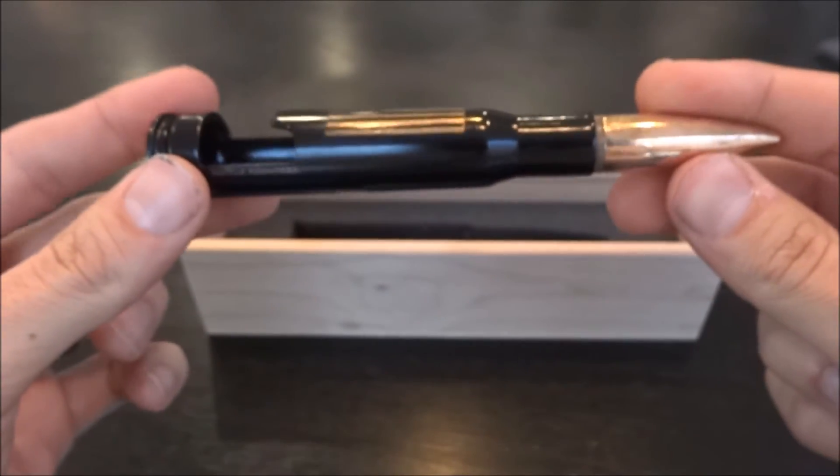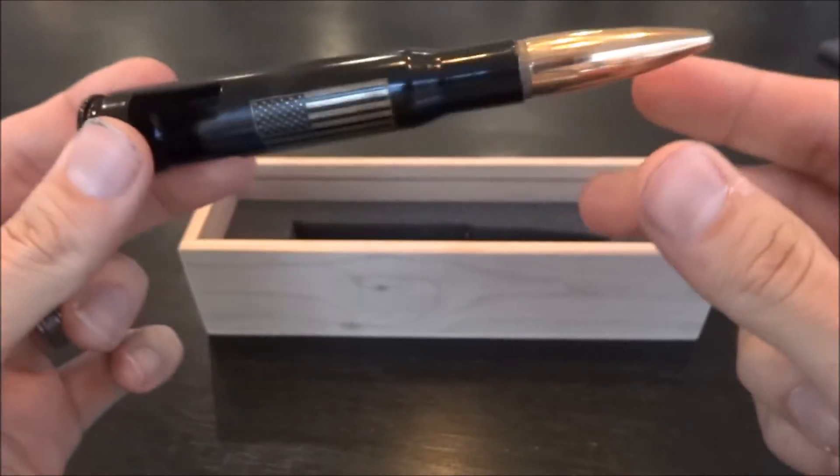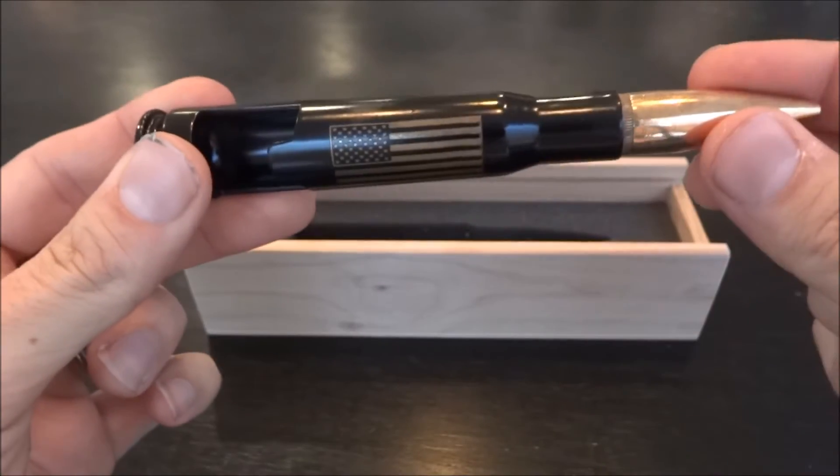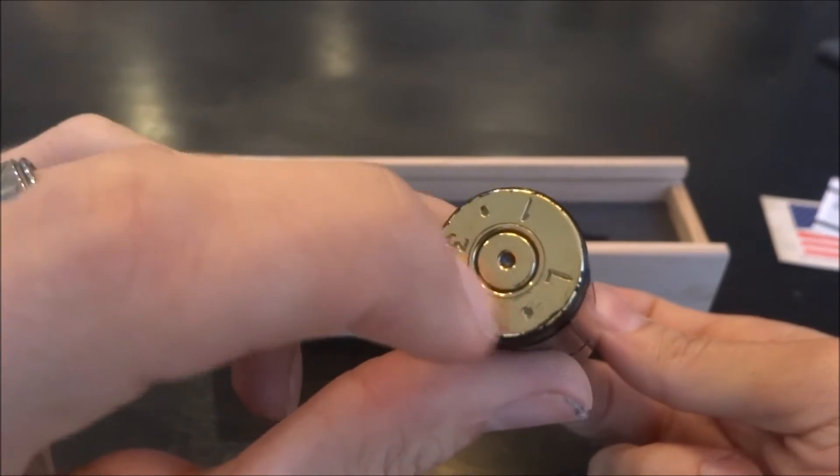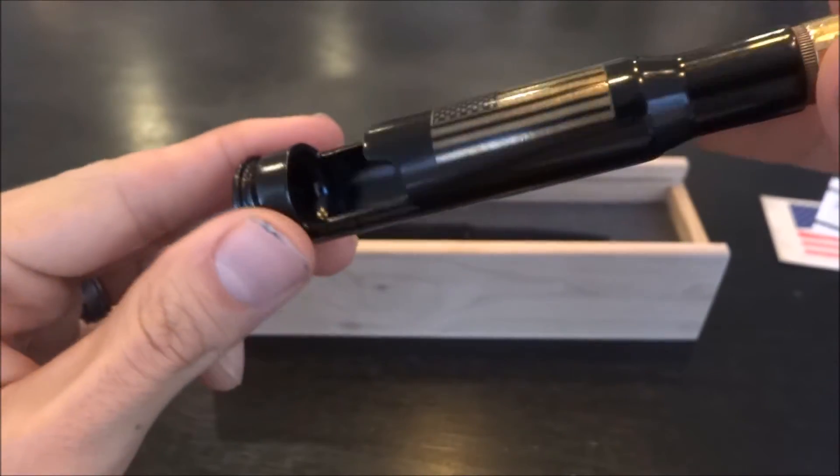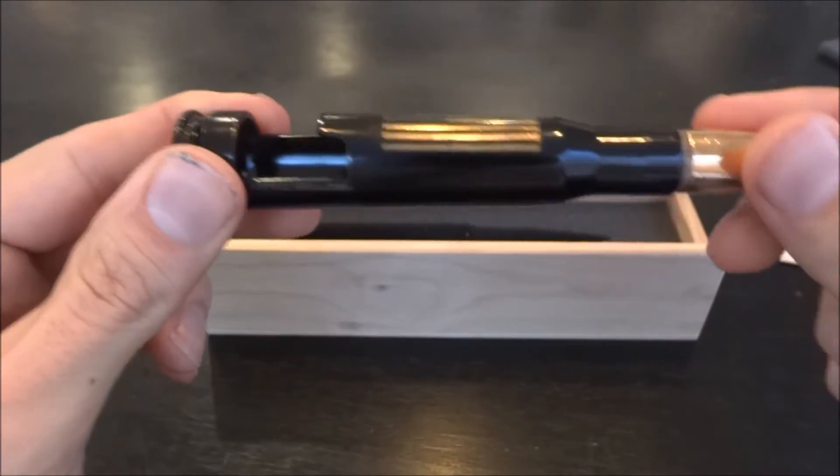Pretty much how they make this is they're a reloading company. They get brass, they clean the brass, they seat a bullet in there, obviously they just don't put any powder. And they left the spent primer still in there from wherever shot it last. And then they customize it however you want it.